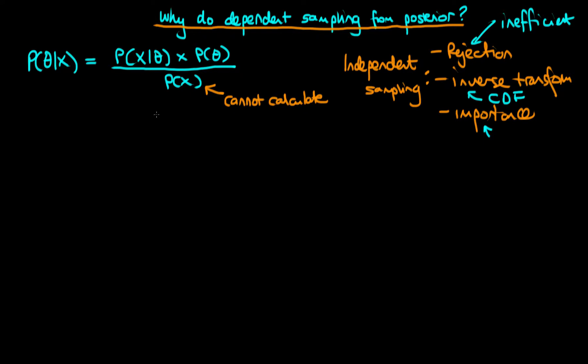There has recently been quite a lot of development of methods related to importance sampling for inference, particularly for state space models under sequential importance sampling, but vanilla importance sampling on its own tends not to be useful for Bayesian inference. So it seems we can't use independent sampling for Bayesian inference. It turns out we do a thing known as dependent sampling, where the next value we sample from a distribution depends on the current value we've sampled.